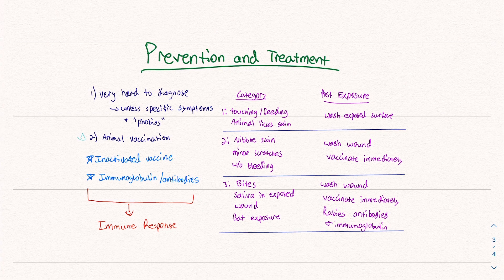The best way to prevent is animal vaccination. When someone is vaccinated, they receive what's called an inactivated vaccine — they inactivate a strain of the virus and inject you with it to help you have an immune response. Depending on the category of the exposure, you could also get immunoglobulins or antibodies. In general, these are just pieces — things you're given to help you have an immune response against the virus. Let's talk about these categories.